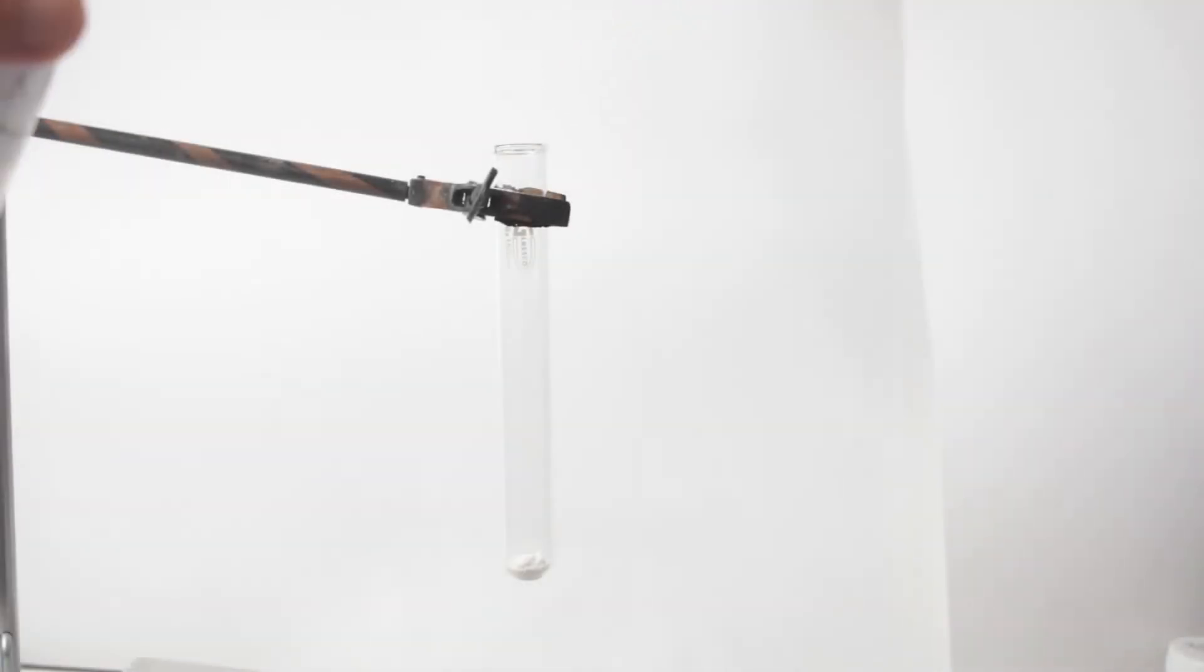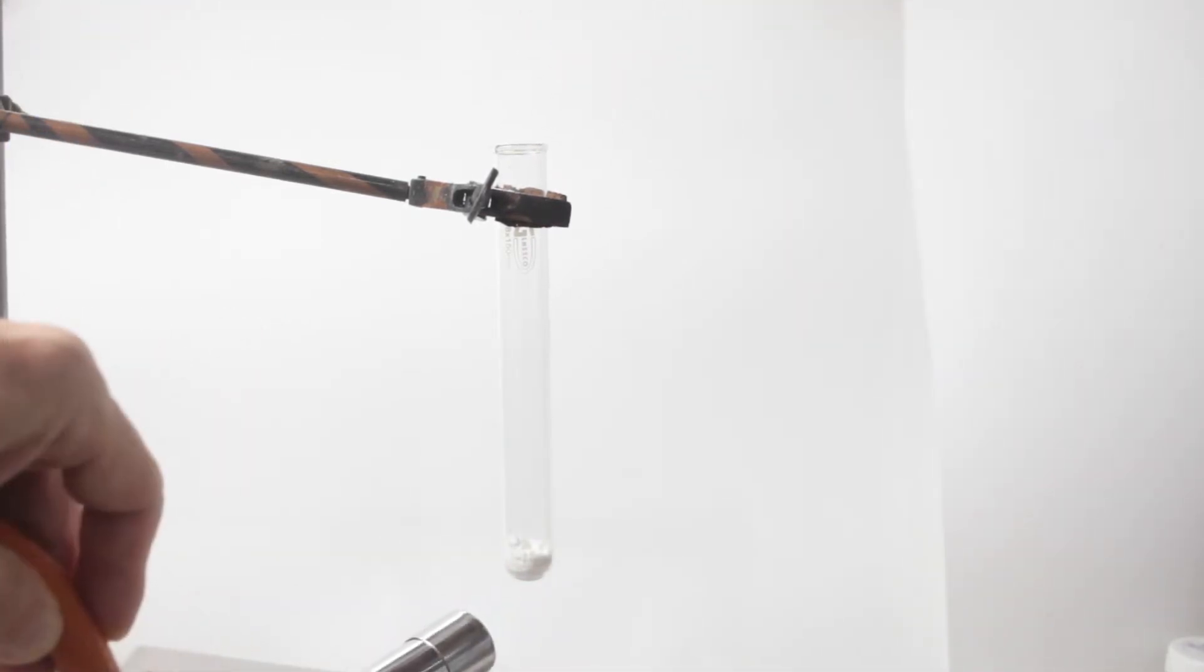Potassium nitrate is a white salt with a rather low melting point, about 334. It melts easily and already at 400 it starts decomposing.